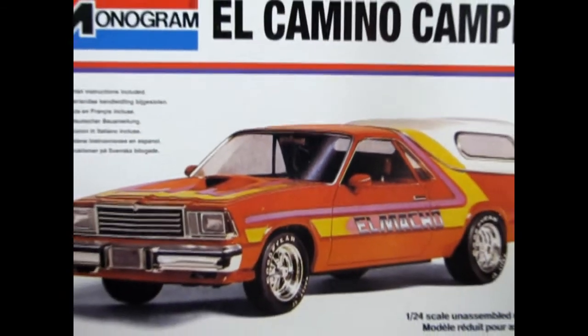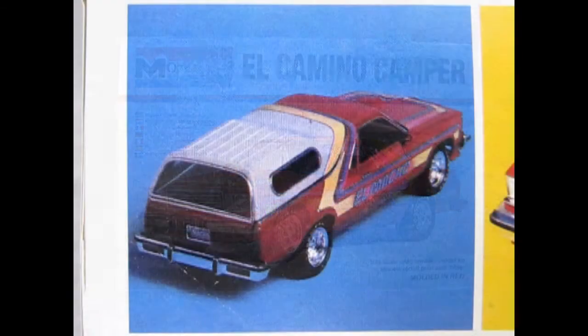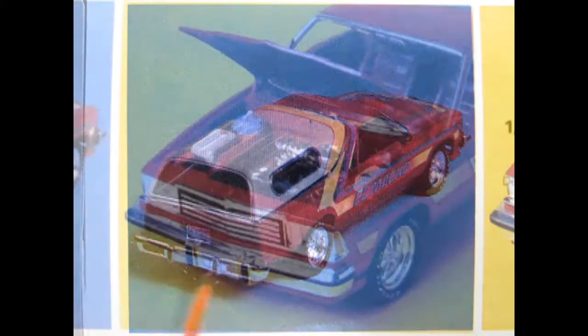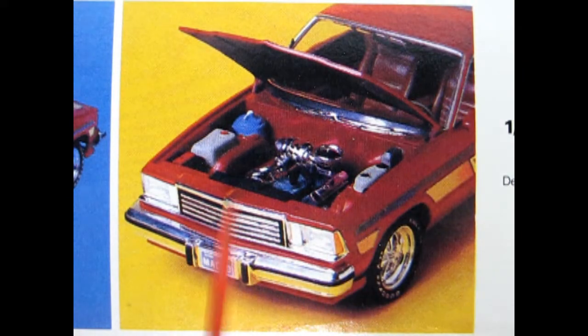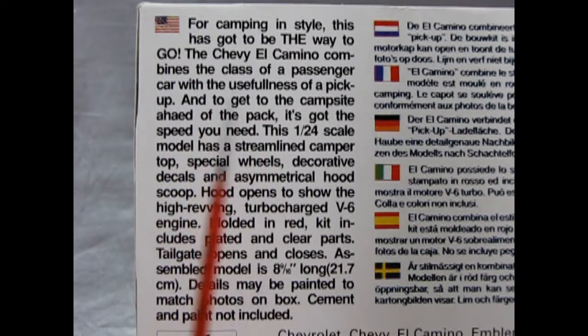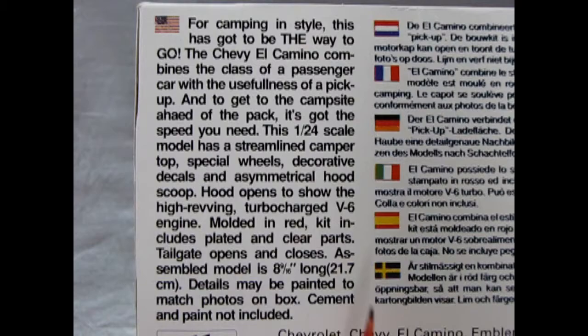Now we go all the way back to 1979 to our Chevrolet showroom where we get to take a look at the El Camino Camper. This is a Monogram kit in 1/25th scale. The side of the box shows our rear three-quarter view of our camper as well as the front with the hood up to show our engine. We also have this great write-up on the side of the box in English telling us more about our El Camino Camper as well as in many other different languages.